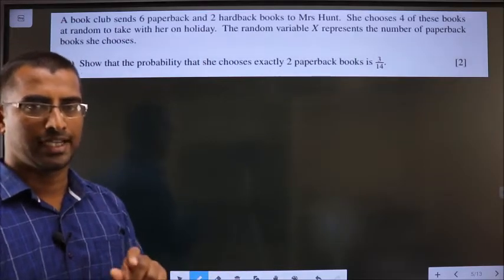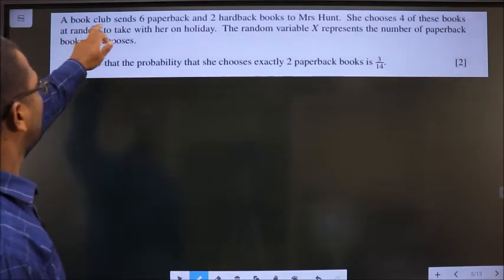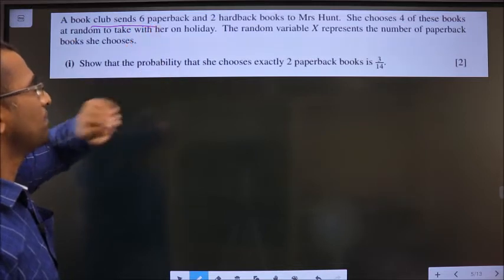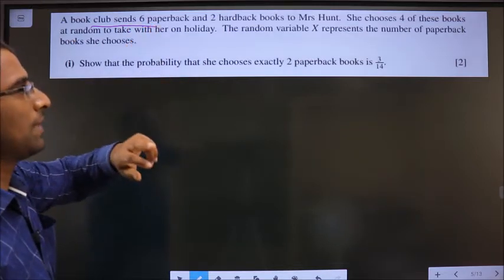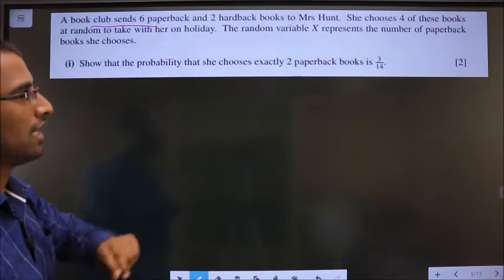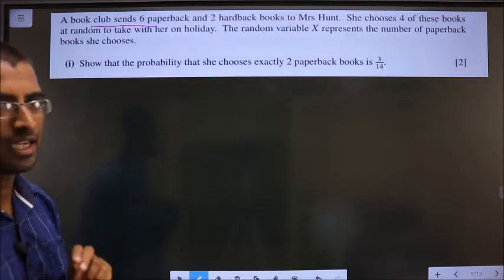Let us find the probability. A book club sends 6 paperback and 2 hardback books to Ms. Hunt. You came across information, write it down.